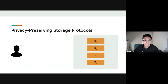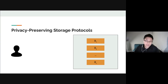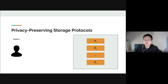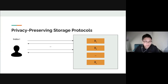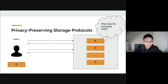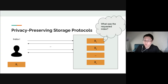Today we're focusing on privacy-preserving storage protocols. We're considering a setting where on the left you have a client, and on the right you have a server holding some data — an array of n entries b1, b2, and so forth. The client wants to query and retrieve the i-th index from the server-held array in a privacy-preserving way, such that whatever the server sees, it can't tell what the requested index i was.